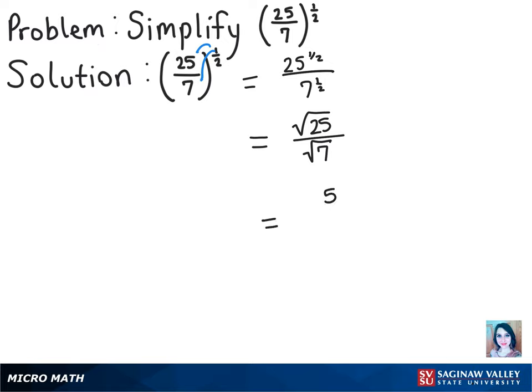So we can write that here. But there isn't a rational square root of 7, so we'll just leave that as the square root of 7.